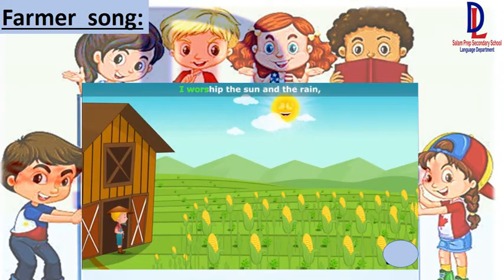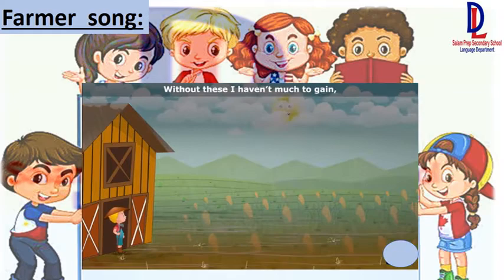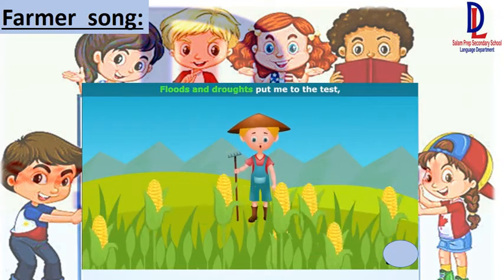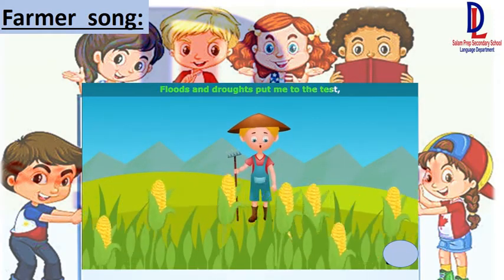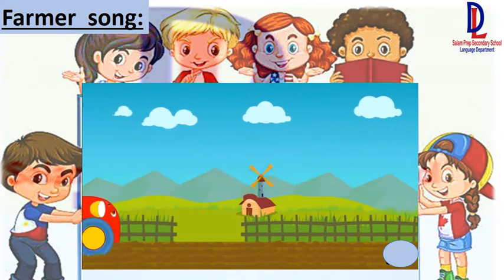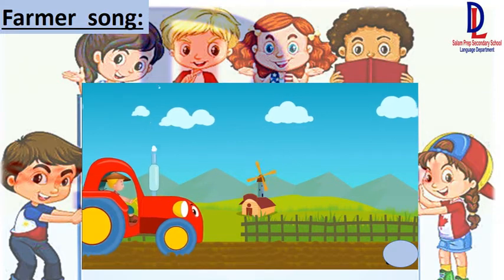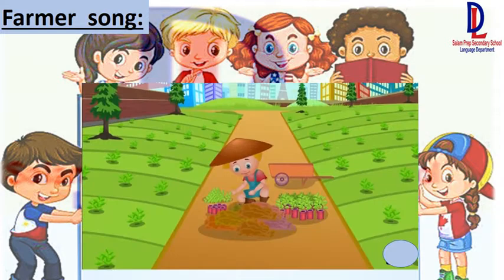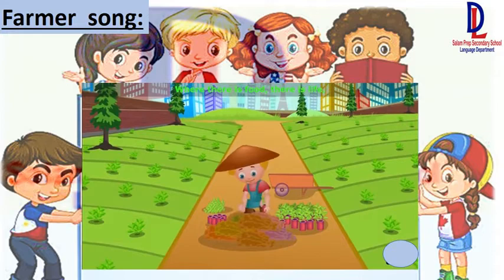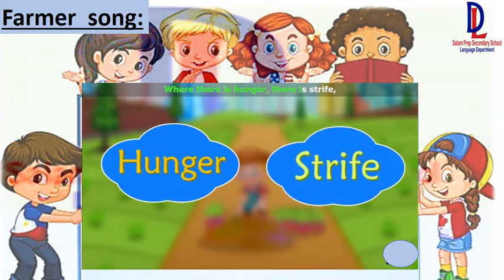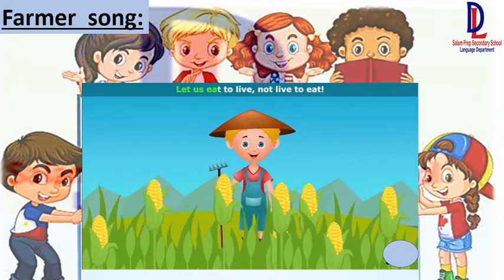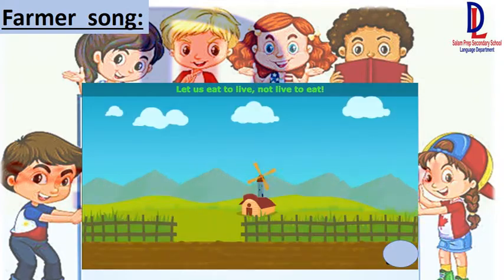I worship the sun and the rain — without these I haven't much to gain. Floods and droughts put me to the test; insects and pests don't let me rest. Where there is food there is life, where there is hunger there is strife. Let us not be overcome by our greed — let us eat to live, not live to eat.